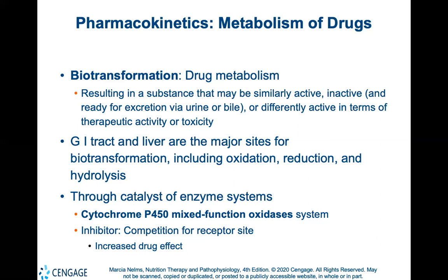A metabolized drug has been chemically altered. Drug metabolism is typically discussed in the context of phase one reactions and phase two, where a second molecule is conjugated with the substrate from phase one. The GI tract and liver are the major sites for biotransformation, including oxidation, reduction, and hydrolysis. The GI tract serves as the first site of metabolism for orally administered drugs. Absorbed drugs are then delivered to the liver via the portal vein. Most drug biotransformation in the liver is accomplished by the hepatic enzyme system called the cytochrome P450 mixed function oxidase system.